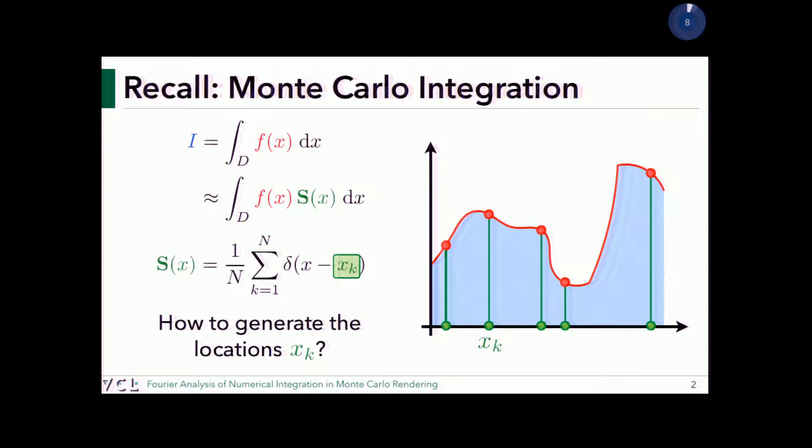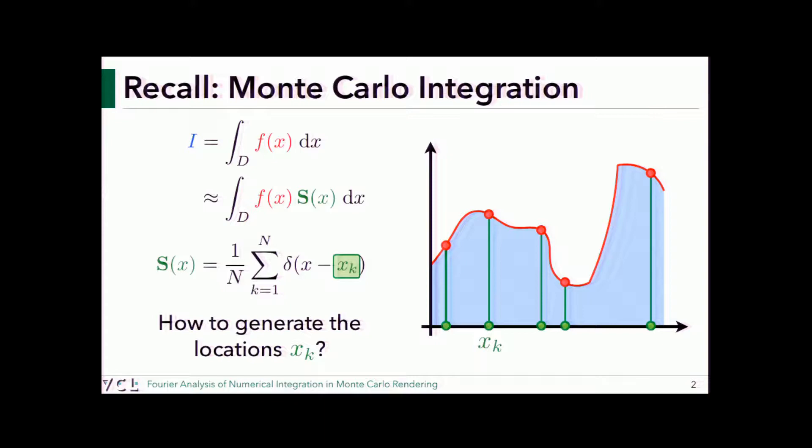What we're going to be talking about now is how do we generate x_k. Yesterday we looked at how we can modify the distribution of x_k, but for this morning we're only going to look at uniform. We saw two ways to generate uniform random numbers: uniformly random, and the special way called jittered sampling or stratified sampling.